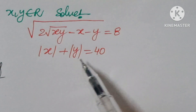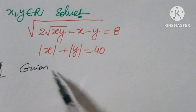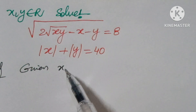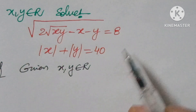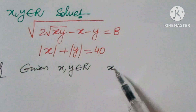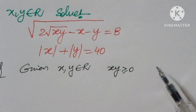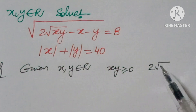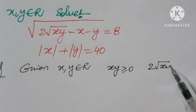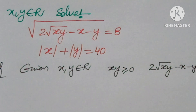So, how to solve this problem where we have a radical and also a modulus? First of all, x, y belongs to real numbers, so the value of xy will be greater than or equal to zero. From this, 2√(xy) − x − y will be greater than or equal to zero.